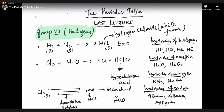Alkanes, alkenes, alkynes — if you study organic chemistry, they are all hydrides of carbon. Not all hydrocarbons, but we can also call alkanes hydrides of carbon. In fact, carbon has the most abundant hydrides — that's what gives organic chemistry its enormous scope.